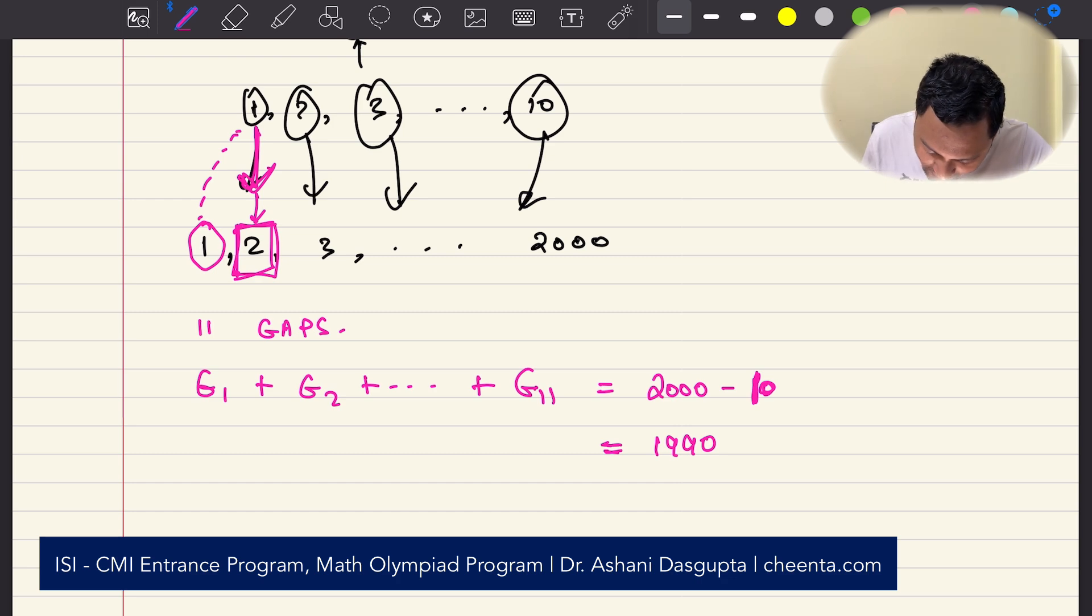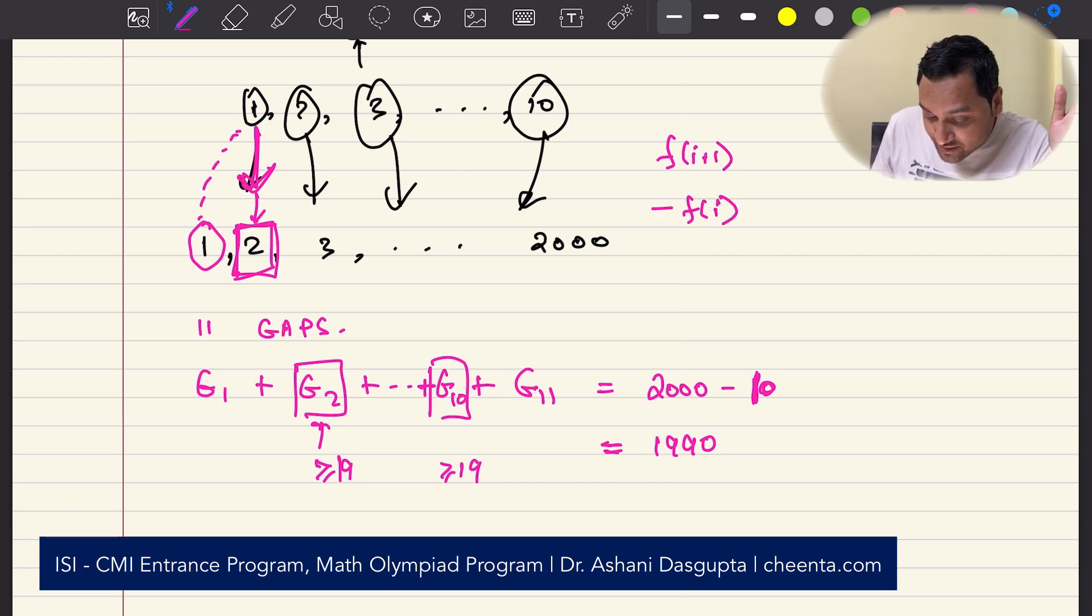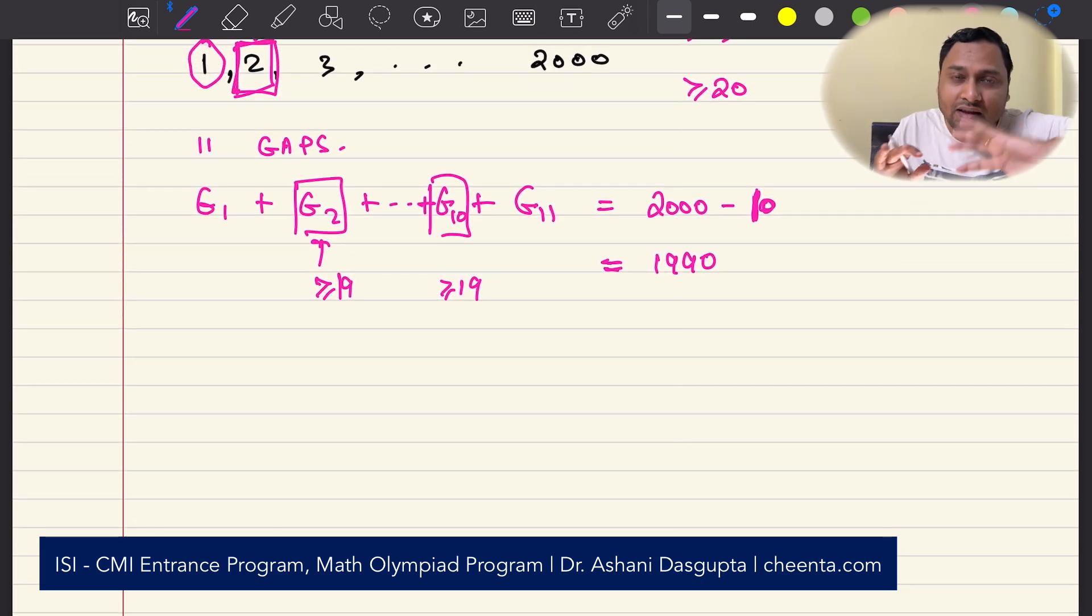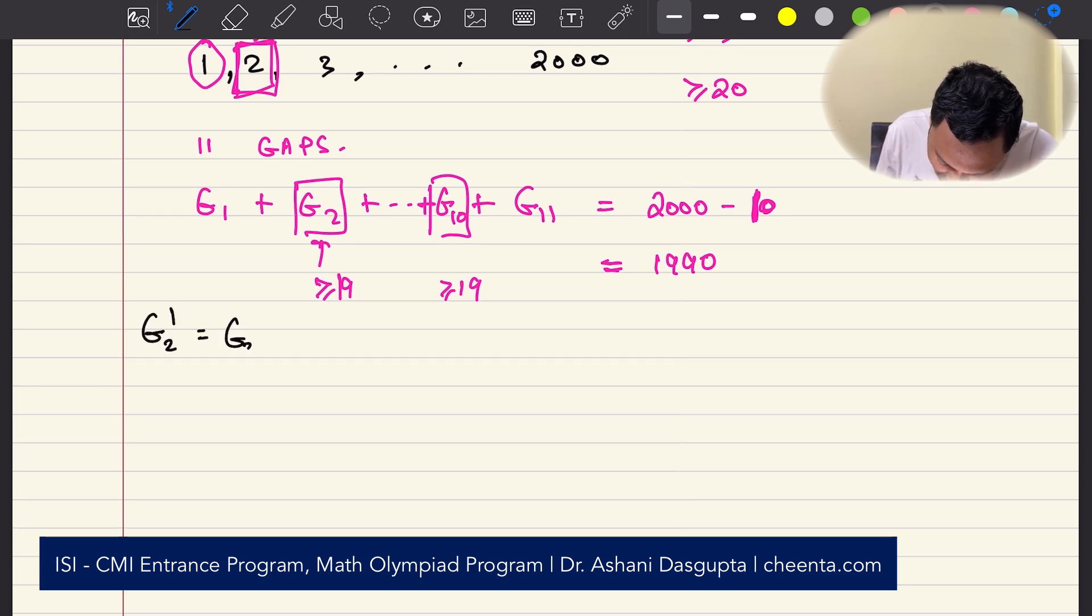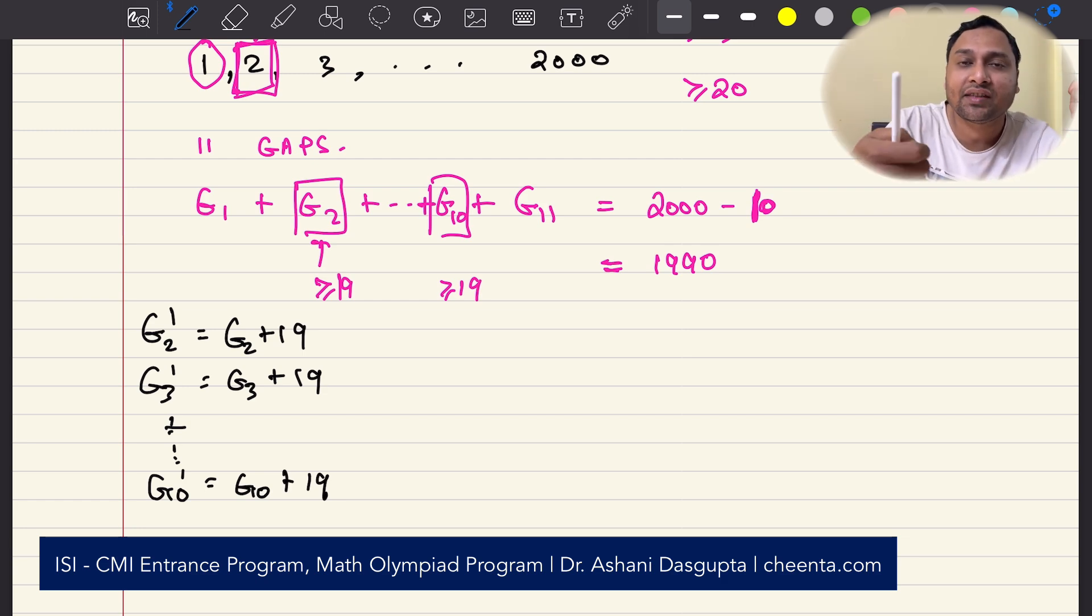There is one more thing. From gap 2 to gap 10, we want these to be 19 or more. We want these gaps to be 19 or more. Because f(i+1) - f(i), we want this to be greater than or equals to 20. So, between them, there has to be 19 or more numbers. So, what I'm going to do is, I'm just going to give these gap values an initiation number, which is 19. So, G2 prime equals G2 plus 19. G3 prime equals G3 plus 19. Like this, G10 prime equals G10 plus 19. So, I'm just going to initiate them by 19.